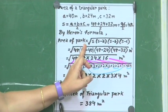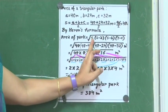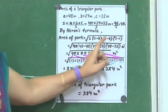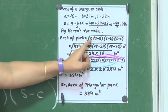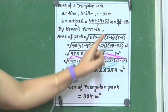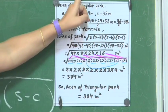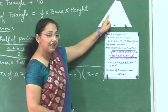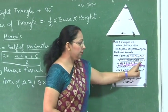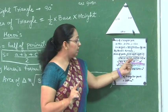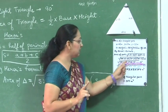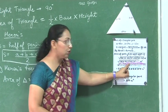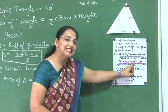Now the last task is to find the area using Heron's formula: √(S × (S−A) × (S−B) × (S−C)). Substituting: S = 48, S − A = 48 − 40 = 8, S − B = 48 − 24 = 24, and S − C = 48 − 32 = 16. Remember BODMAS — first solve the brackets: 48 − 40 = 8, 48 − 24 = 24, 48 − 32 = 16.